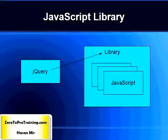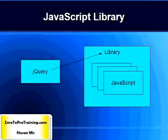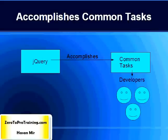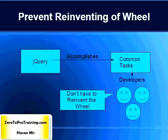jQuery is a JavaScript library — a collection of reusable JavaScript code. It accomplishes common tasks for web developers, so that they don't have to reinvent the wheel.